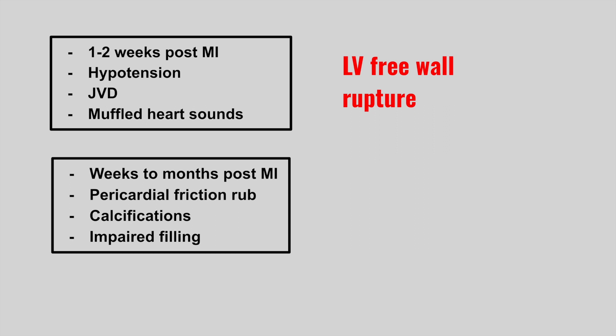The next one is someone who presents weeks to months after an MI with a pericardial friction rub, calcifications, and impaired filling of the heart. This is Dressler syndrome, which is an autoimmune condition.